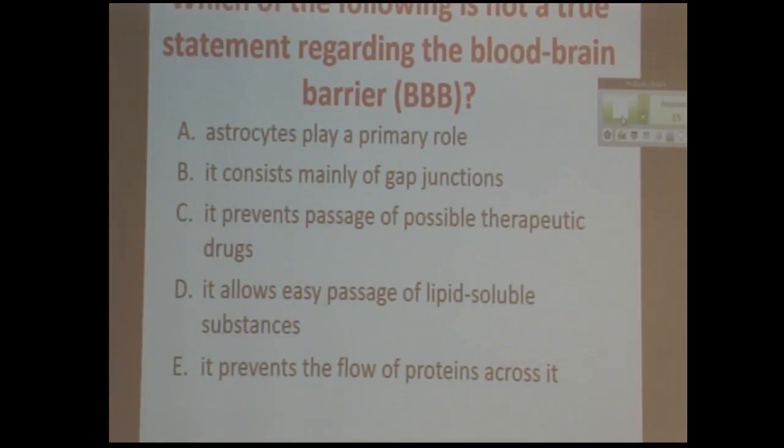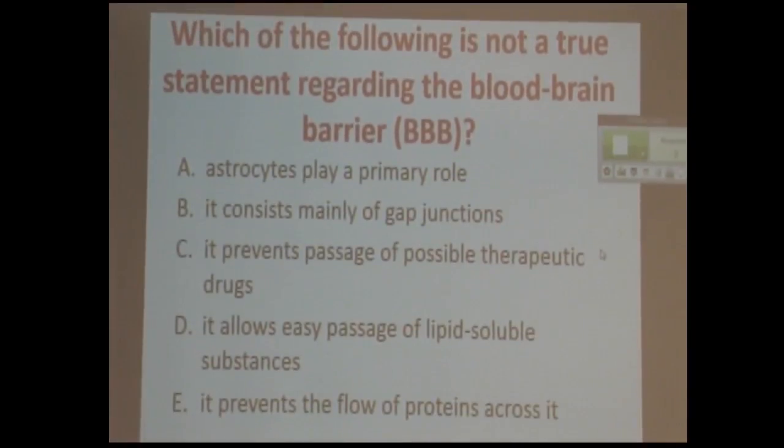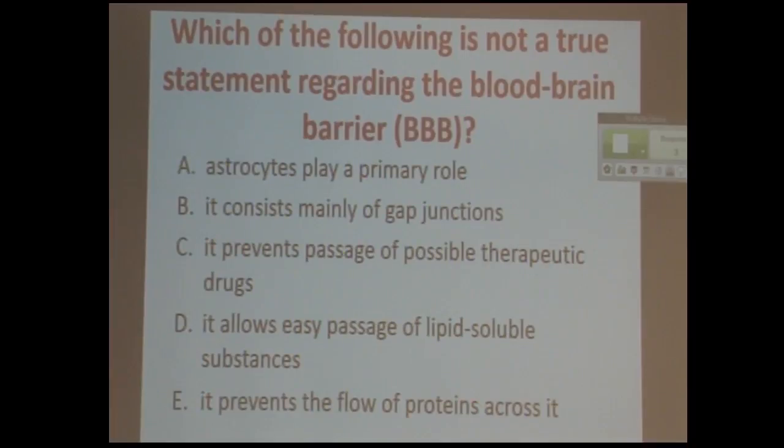So which of these is not a true statement about that barrier? So the winning vote right now is B. And you would be correct if you chose B. It's not gap junctions. Remember, gap junctions are like big holes. It's the last thing you would want. You want tight junctions. That's what you want.